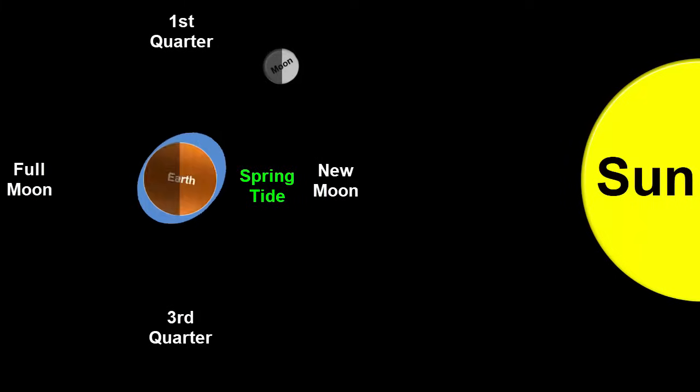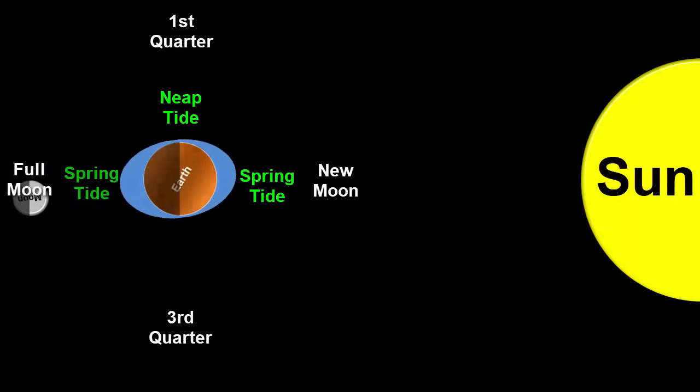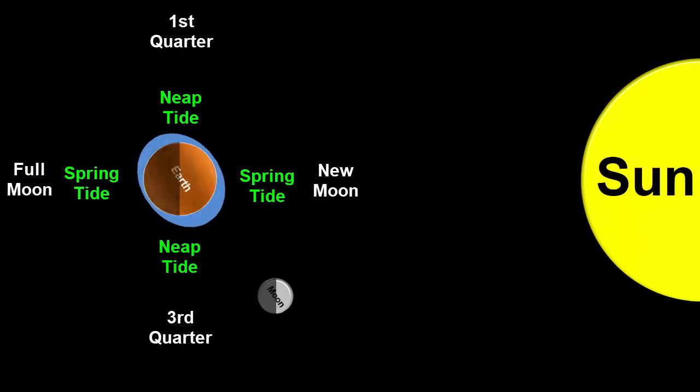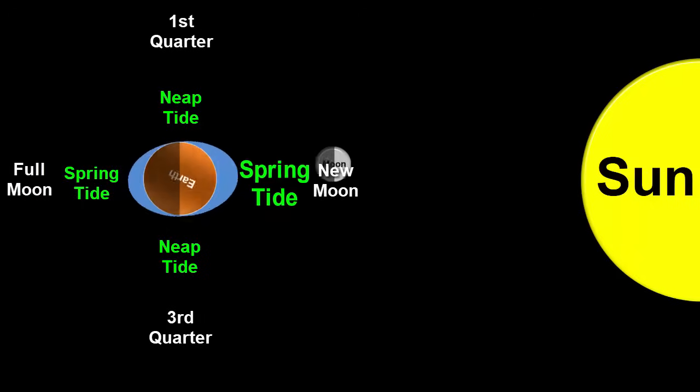Each month, the Earth spins almost 30 times, so we get nearly 60 high tides and 60 low tides. Of these, two are spring tides and two are neap tides.